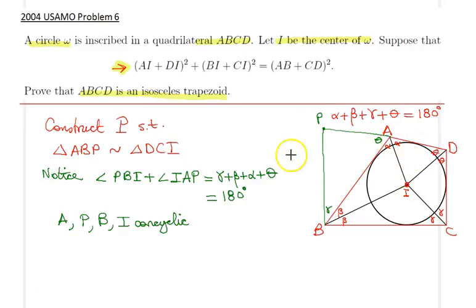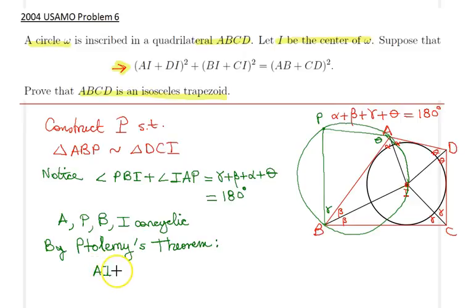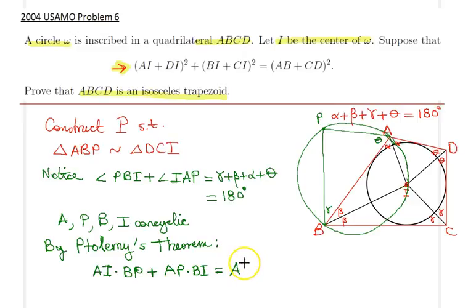Let me draw a circle through A, P, B, and I. Given that quadrilateral APBI is cyclic, I can now apply Ptolemy's theorem. So by Ptolemy: AI · BP + AP · BI = AB · PI, namely the product of the diagonals.